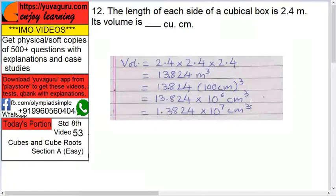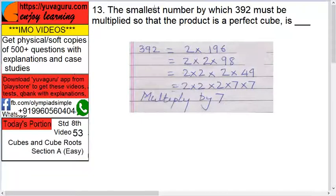Next, the smallest number by which 392 must be multiplied so that the product is a perfect cube. Here means you have to multiply 392 with some number so that the answer is a perfect cube. Now first find out what 392 is by factorization. 392 equals 2 into 196.